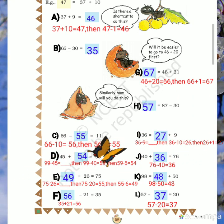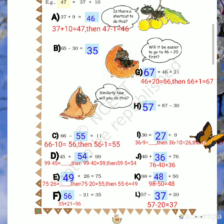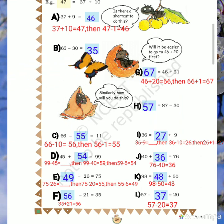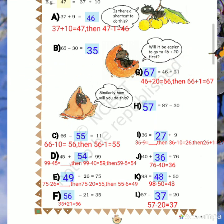H: 87 minus 30 equals dash. Start at 87 and come 30 steps back. Which number will you reach? 57.